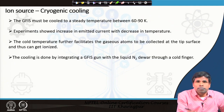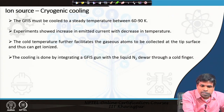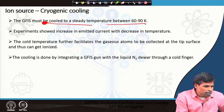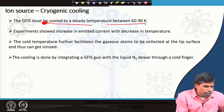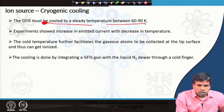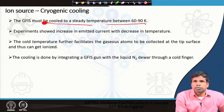Regarding cryogenic cooling: the gas-filled ionization source must be cooled to a steady temperature between 60 to 90 Kelvin — a very low temperature. The reason is that the tip has to be highly stable.